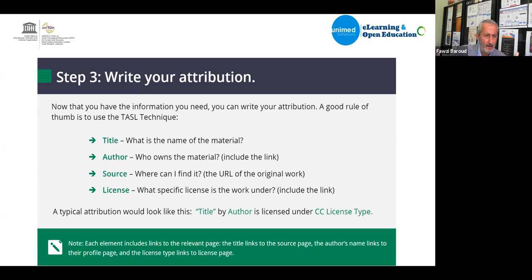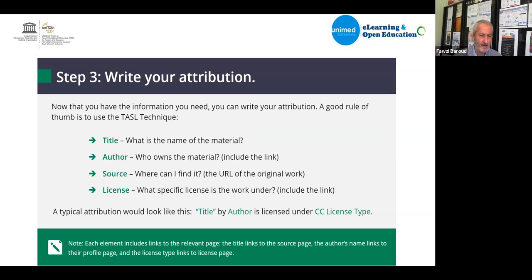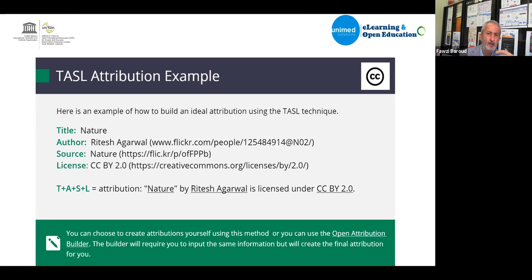For example, if you find a picture called 'Nature' on Flickr, the attribution would include the title, the author's name with a link, the source as Flickr, and the license version. This is the attribution process. Whenever we find any resource on the internet with an open license, all we have to do is use the license in the proper way and give proper attribution — then there is no problem whatsoever.